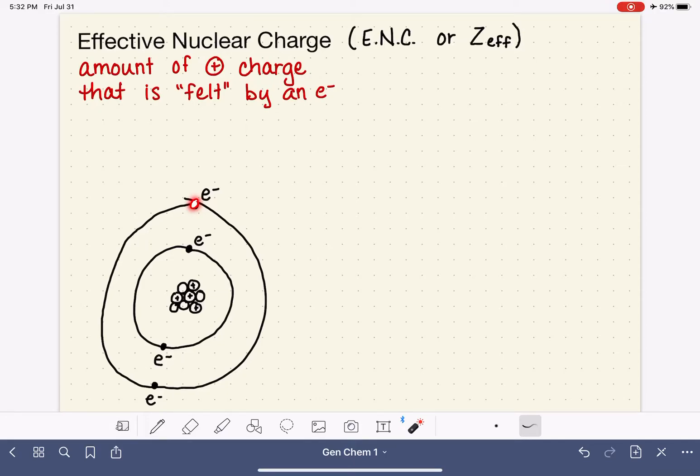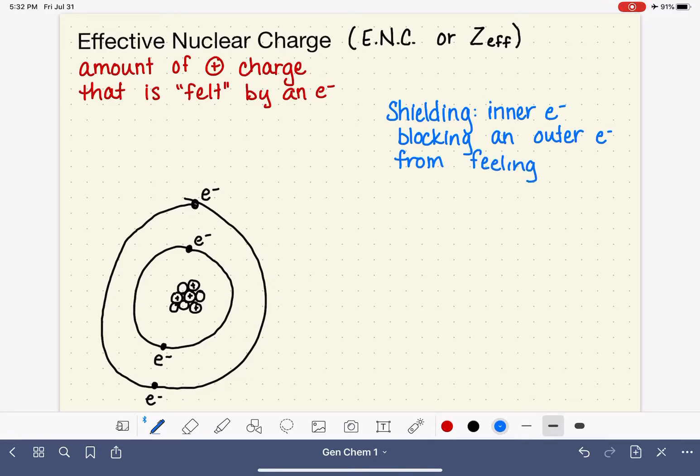In addition to that, this electron is experiencing a phenomenon that we call shielding. Shielding is when an electron, such as this one right here, is kind of blocked by an electron that exists in a lower energy level. That electron is sitting in between, in the way, of the nucleus and the electron in question. So we're going to define shielding as when we have an inner electron that is blocking an outer electron from feeling the nucleus, the positive charge of the nucleus.